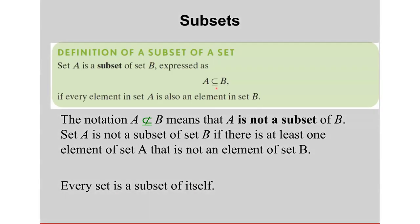This notation here is what we use to express or denote a subset. This expression means that A is a subset of B. A is a subset of B if every element in A is also an element in B — that means if all elements in A can be found in set B.